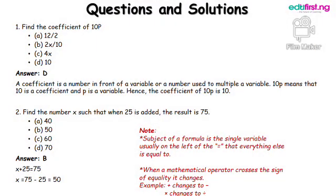Question 1: Find the coefficient of 10p. A coefficient is a number in front of a variable or a number used to multiply a variable. 10p means that 10 is a coefficient and p is a variable. Hence, the coefficient of 10p is 10.